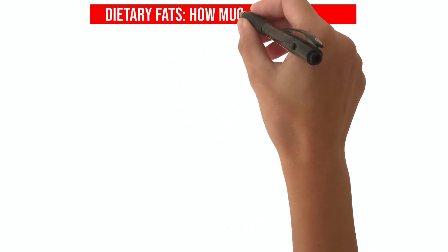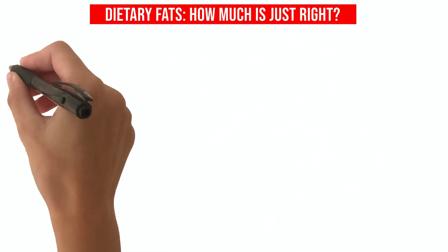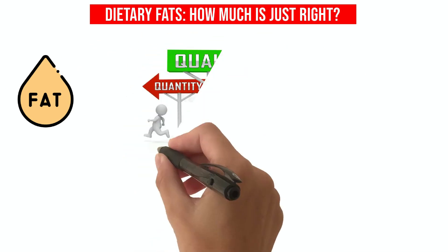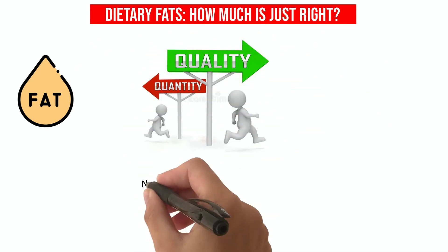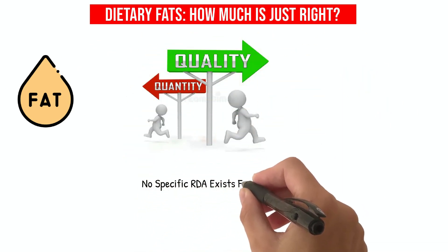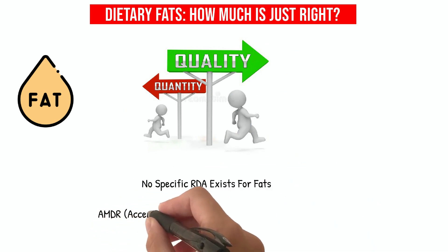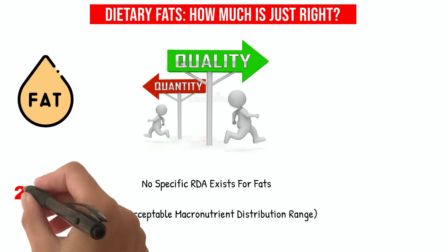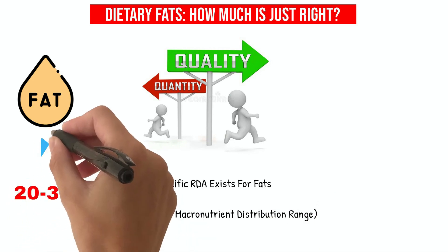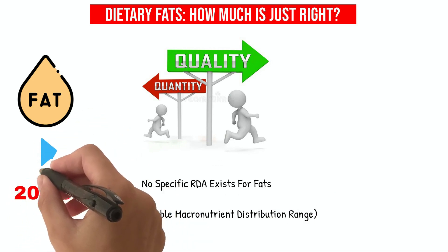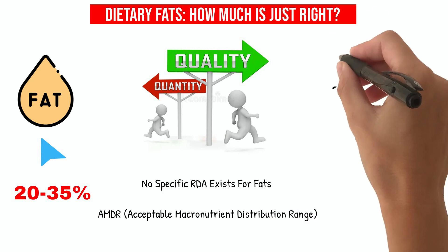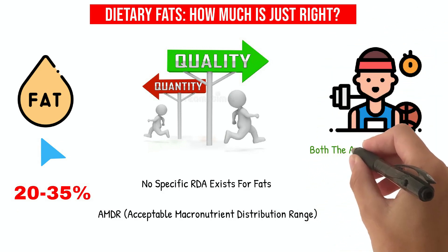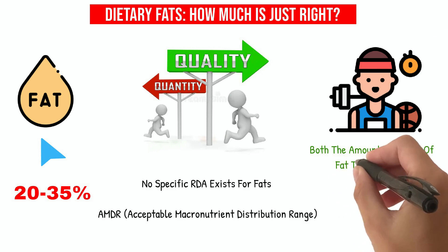Dietary fats: how much is just right? When it comes to dietary fats, it's not just about quantity but quality. While no specific RDA exists for fats, the AMDR — Acceptable Macronutrient Distribution Range — recommends 20–35% of total energy from fats for adults. Athletes, in particular, should pay attention to both the amount and type of fat they consume.